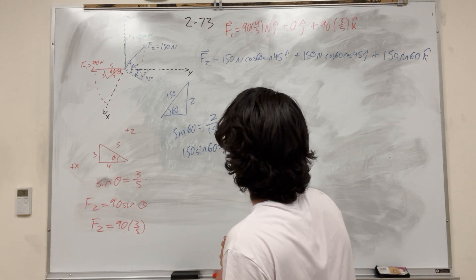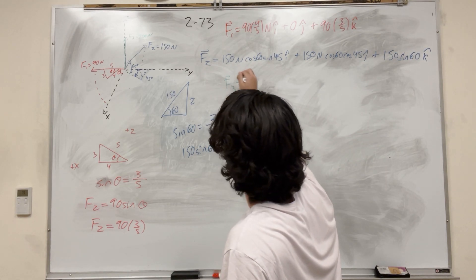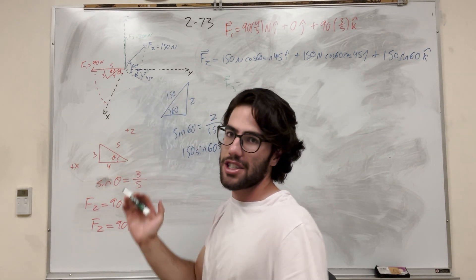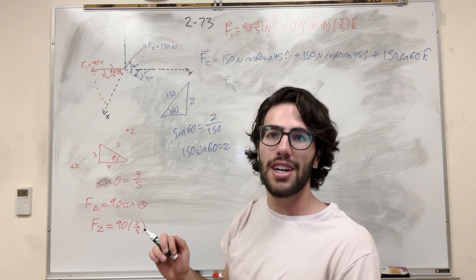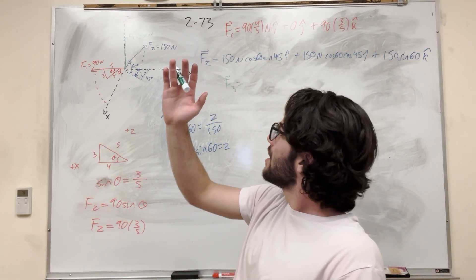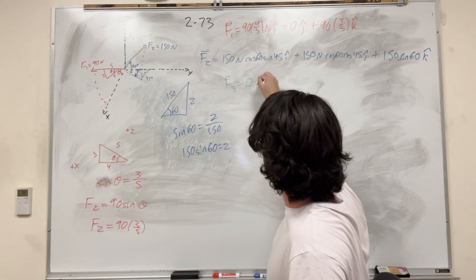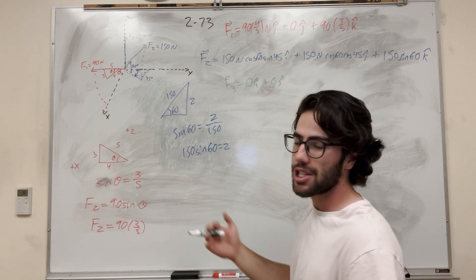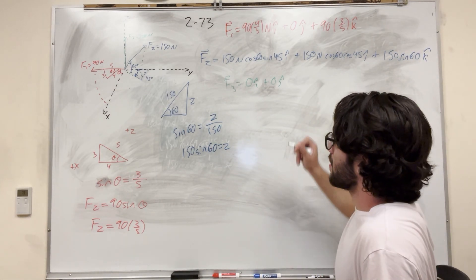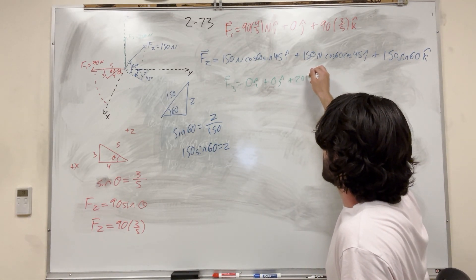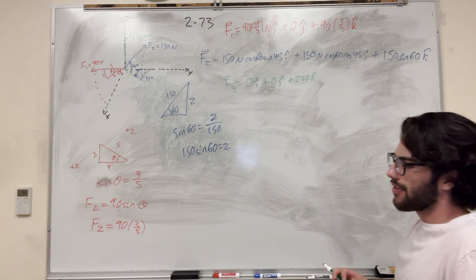Force 3 is the easiest one. It's pointing straight up. There is nothing pushing in the x-direction and nothing pushing in the y-direction, so it's going to be 0i + 0j. It's only going straight up, and because all 200 Newtons is in the z-direction, force 3 = 0i + 0j + 200k Newtons.